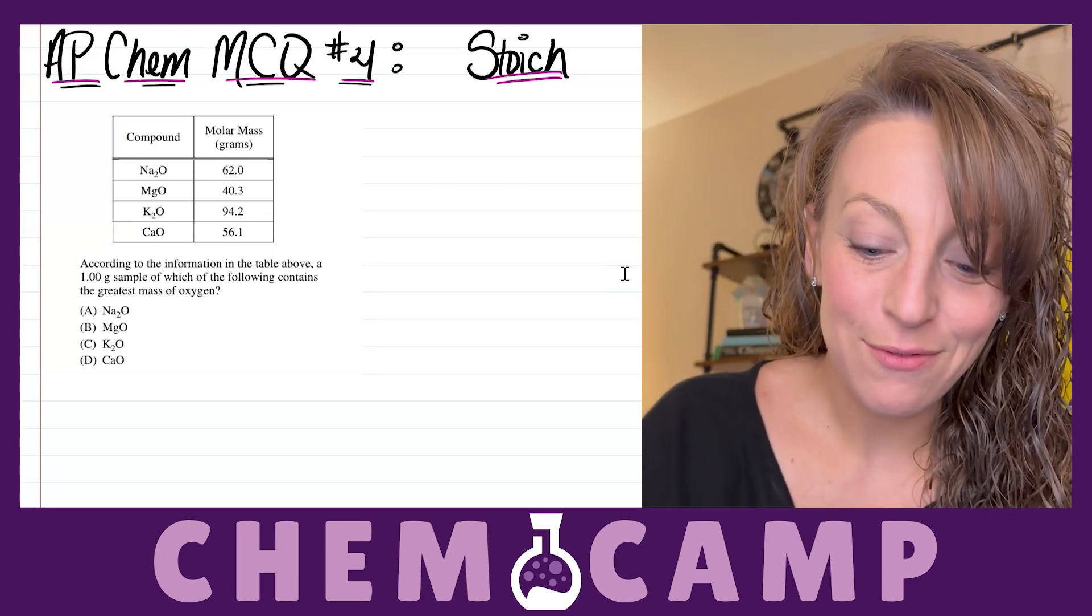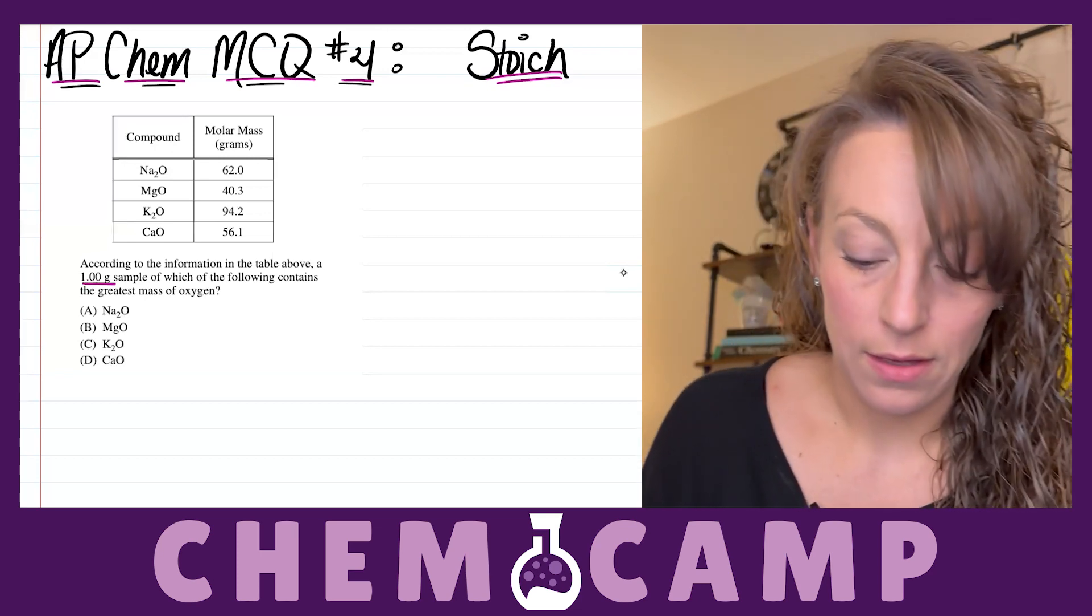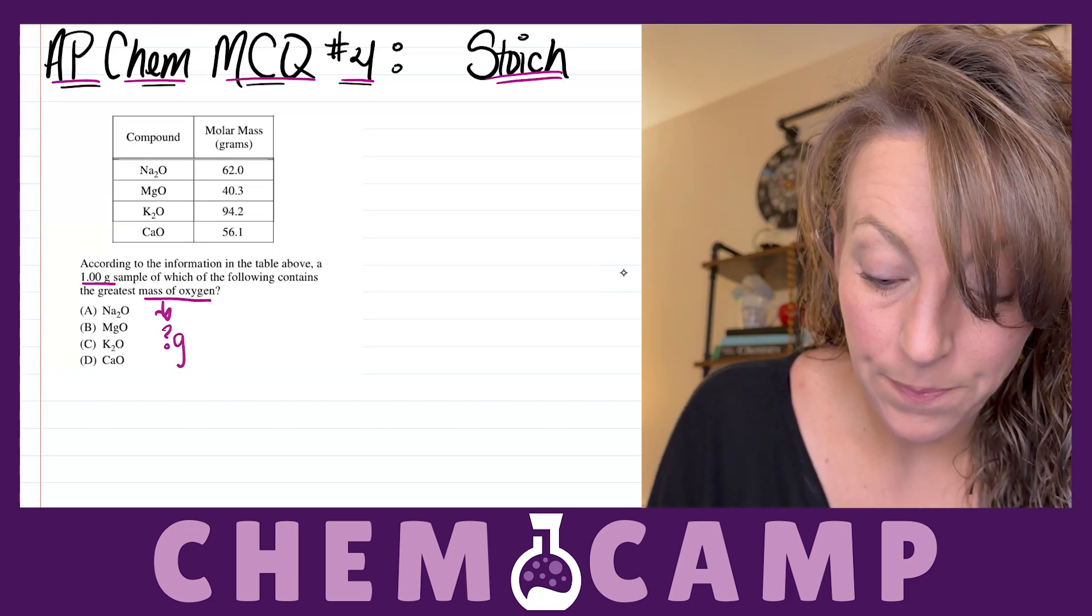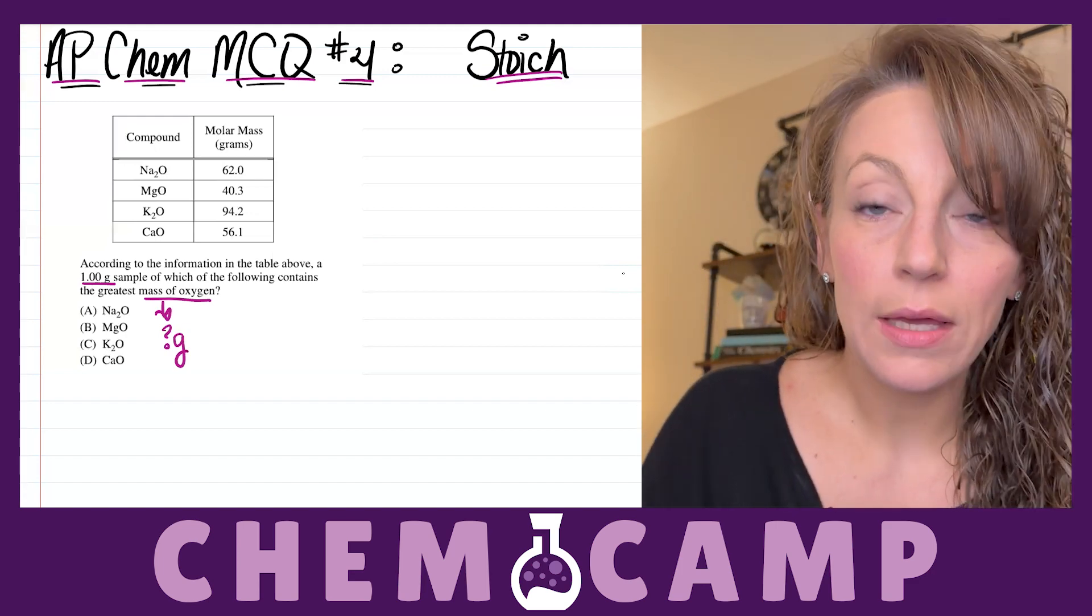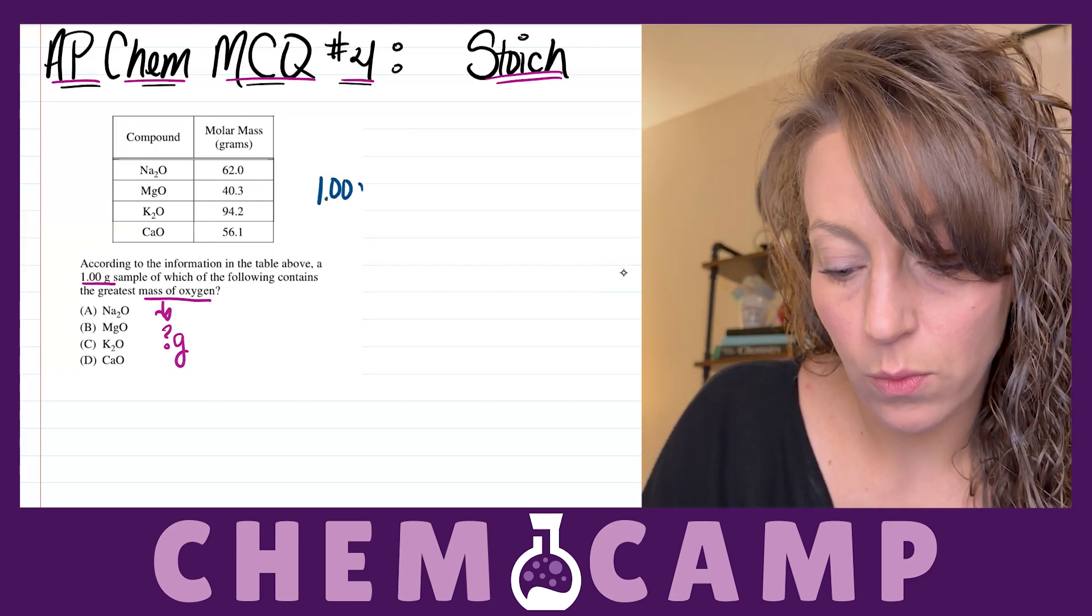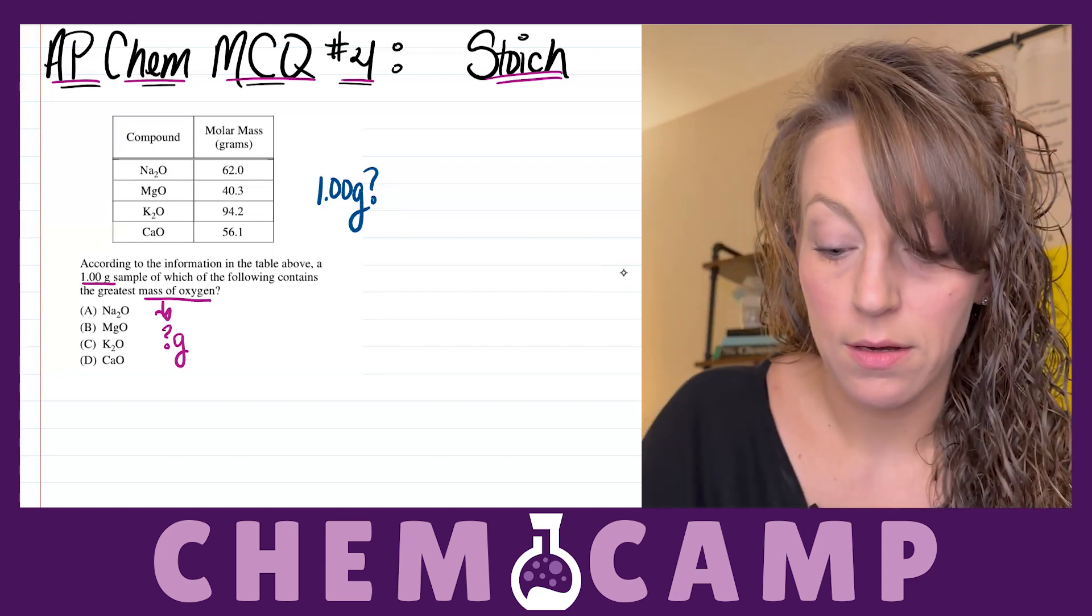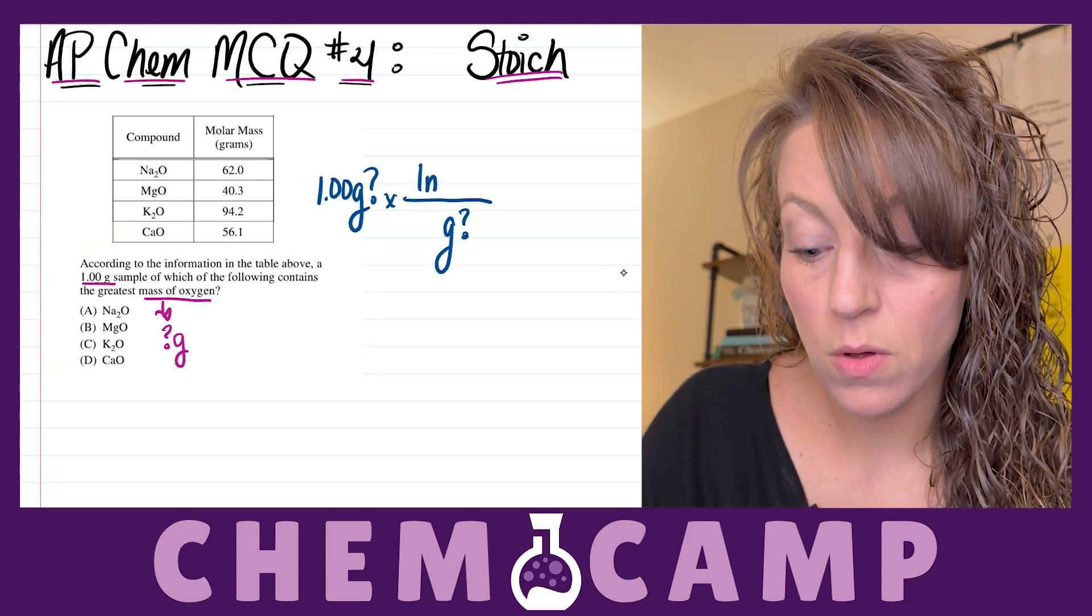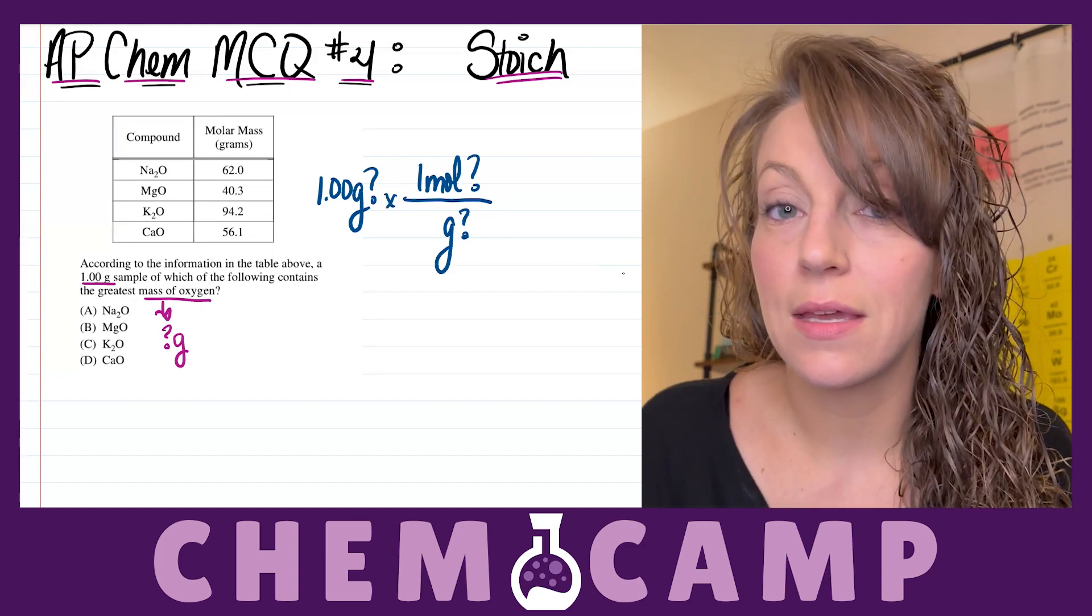So as soon as I read the fact that they want us to go from grams of one thing to mass, or in other words grams of another, I'm thinking stoichiometry. So I'm going to quickly set up a little bit of stoic work where I start with one gram of one of those samples, which one I'm not sure of yet, but I can convert from grams of that particular sample to moles of it using one of those molar masses they give me in that table.